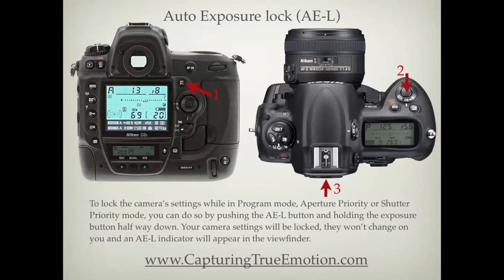To lock the camera settings while in program mode, aperture priority, or shutter priority mode, you can do so by pushing the AEL button and holding the exposure button halfway down. Your camera settings will be locked, they won't change on you, and an AEL indicator will appear in the viewfinder.